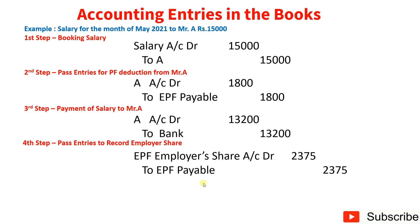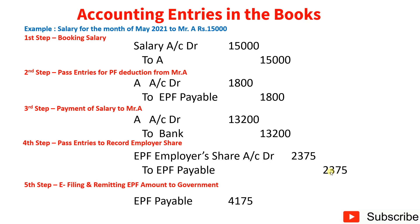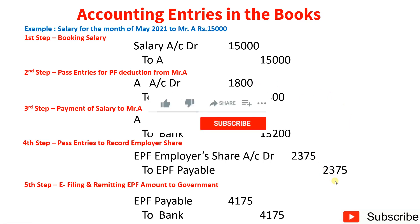The EPF Payable account now shows two credits: Rs. 1,800 (employee) and Rs. 2,375 (employer). Step 5 — e-filing ECR and remitting the EPF amount to the government: debit EPF Payable Rs. 4,175 (1,800 + 2,375), credit Bank account Rs. 4,175. Now all five steps are completed.